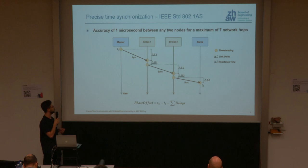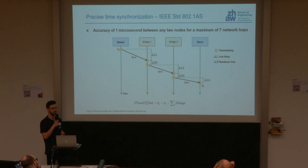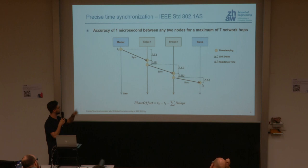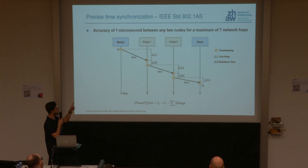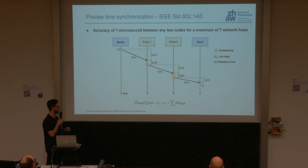In between you can have any number of intermediate devices. The master sends a sync message to the next device, which is forwarded until it reaches the slave. This message is timestamped when first sent by the master, and that timestamp is inserted into the message. Each forwarding device calculates the delay it introduced, and all these delays are summed within the sync message. Finally the slave uses its receive timestamp, T2, minus T1, minus the sum of all intermediate delays to calculate its phase offset to the master.